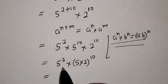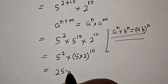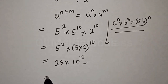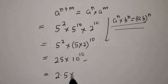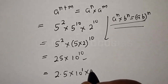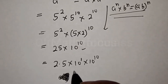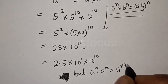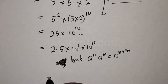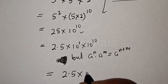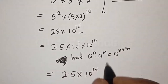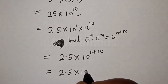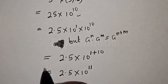So this is equal to 25 times 10 raised to power 10. To put this in standard form, this becomes 2.5 times 10 raised to power 1 multiplied by 10 raised to power 10. Using the rule a raised to power n multiplied by a raised to power m equals a raised to power n plus m, this gives 2.5 times 10 raised to power 11. And that is our final answer.